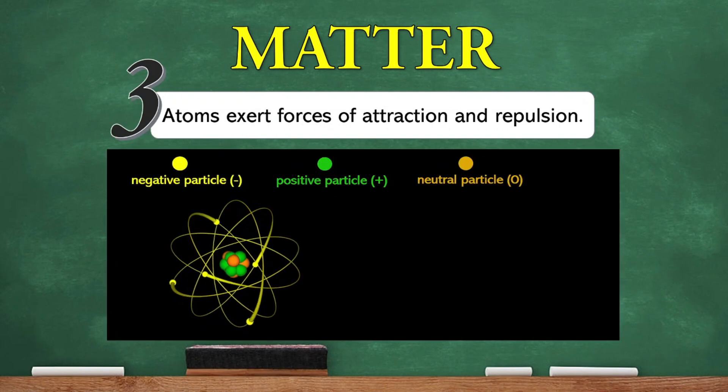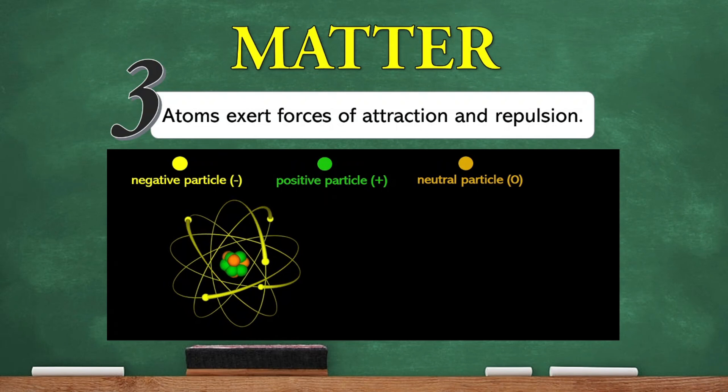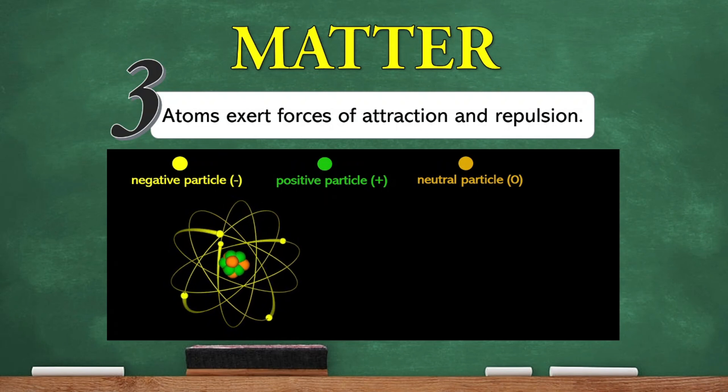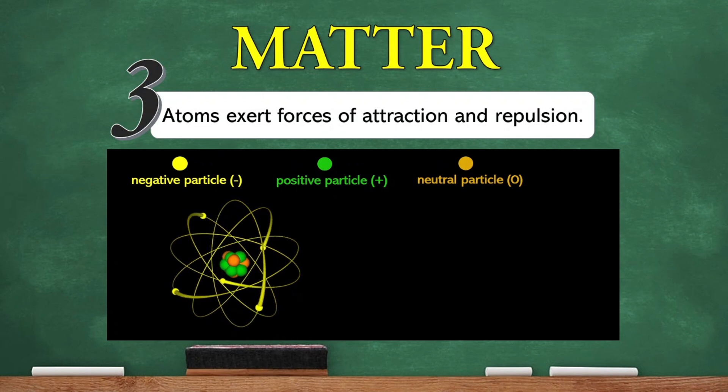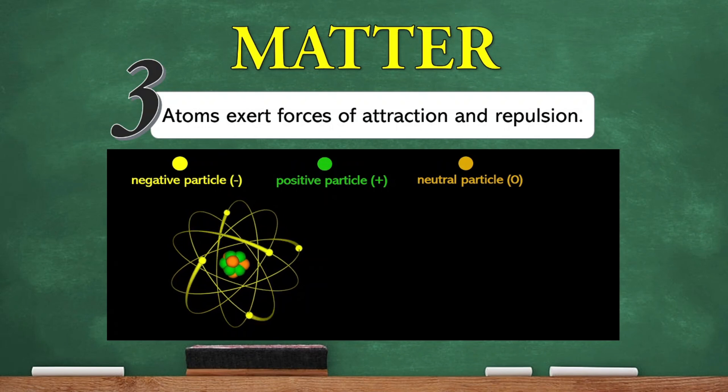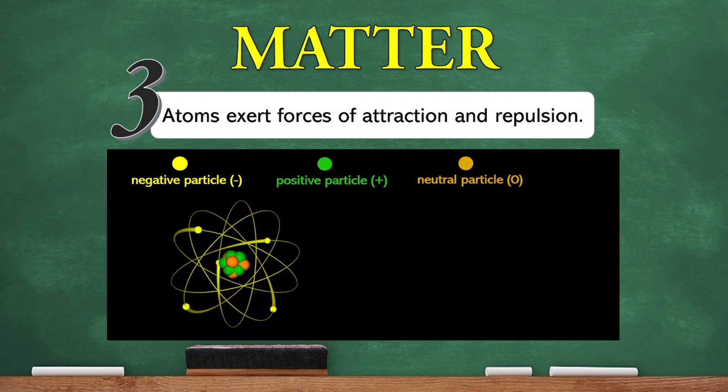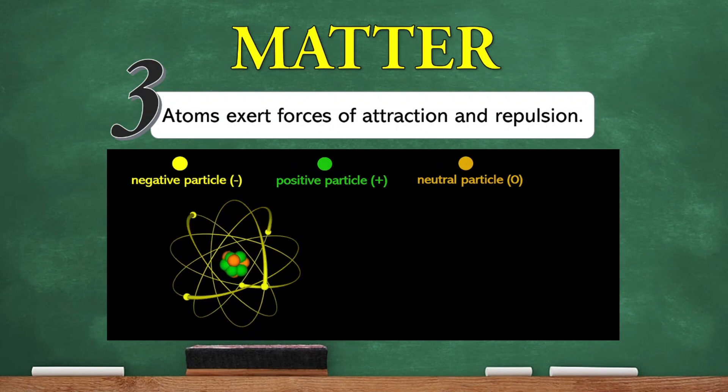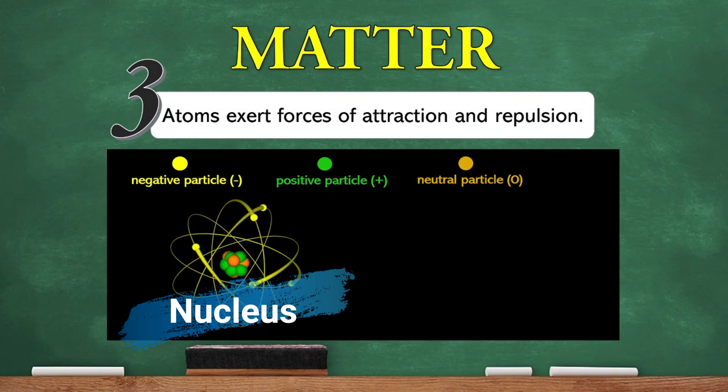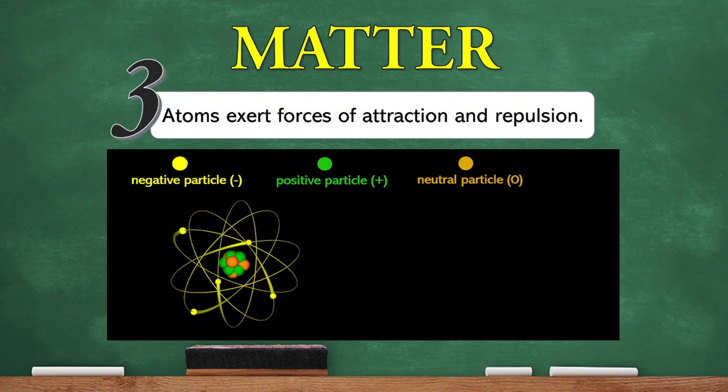Atoms are composed of other smaller particles. We have negative particles, positive particles, and neutral particles. The positive and neutral particles can be found at the central part of an atom known as the nucleus. And the nucleus is surrounded by the negative particles.